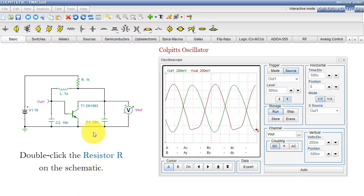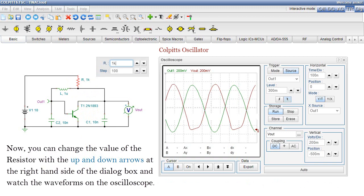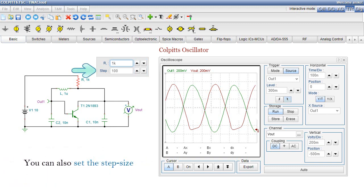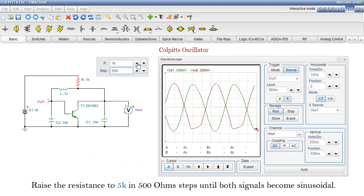Double-click the resistor R on the schematic. Now, you can change the value of the resistor with the up and down arrows at the right-hand side of the dialog box, and watch the waveforms on the oscilloscope. You can also set the step size and change it to 500 ohms. Raise the resistance to 5K in 500 ohms steps until both signals become sinusoidal.